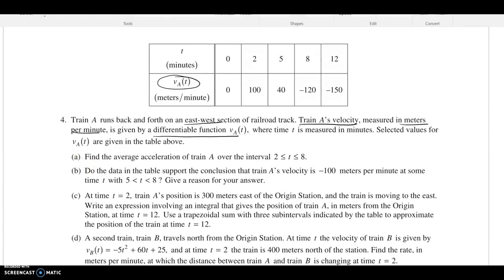We have train A's velocity in meters per minute, noting our units. That's given by a differentiable function VA of T, which we see values for up in this table. So part A, we want to find the average acceleration of train A over the interval two to eight.